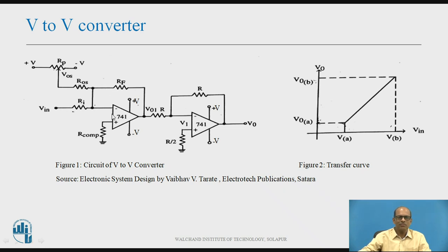This figure shows the circuit diagram for a V-to-V converter. This is the first op-amp and this is the second op-amp. The IC 741 is used as the operational amplifier. The first operational amplifier is connected as an inverting summing amplifier, where there are two inputs: one is V-in and the second is V-os.